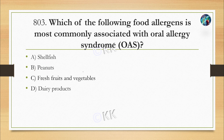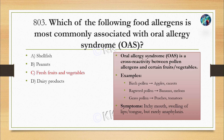Which of the following food allergens is most commonly associated with oral allergy syndrome (OAS)? Option A: shellfish. Option B: peanut. Option C: fresh fruits and vegetables. Option D: dairy products. The correct option is Option C — fresh fruits and vegetables. Oral allergy syndrome is basically caused by cross-reactivity between pollen, grains, and certain fruits and vegetables.